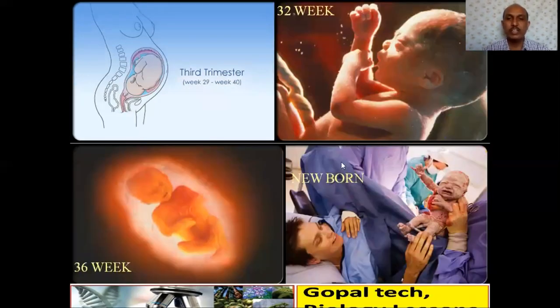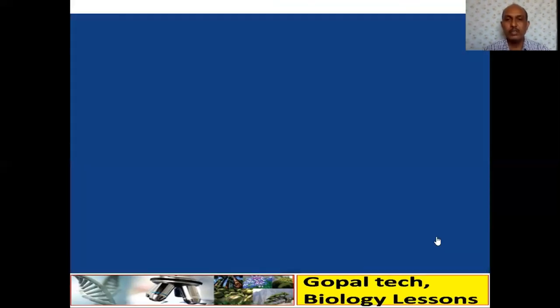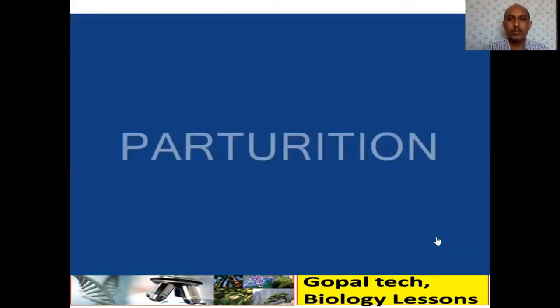Now you can see how the birth of the baby takes place — parturition. At the third trimester, 36 weeks the baby is ready to be born.